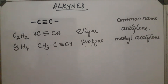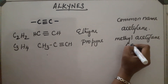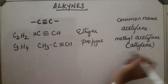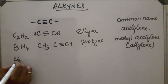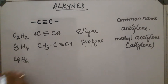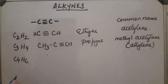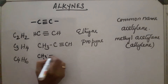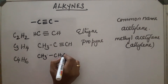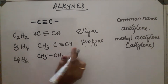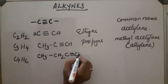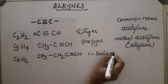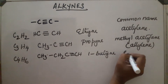According to the derivative naming of acetylene, the next compound is C₄H₆. The structure can be drawn in two ways. The first is CH₃–CH₂–C≡CH. This is called 1-butyne and its common name is ethyl acetylene.